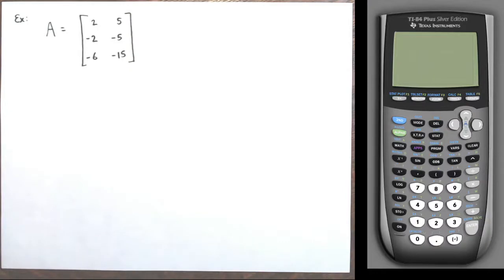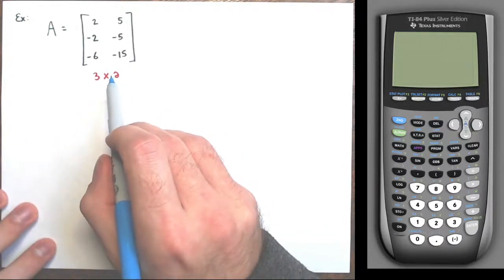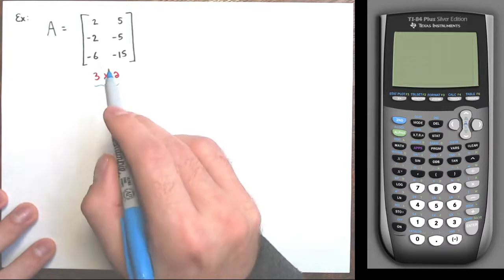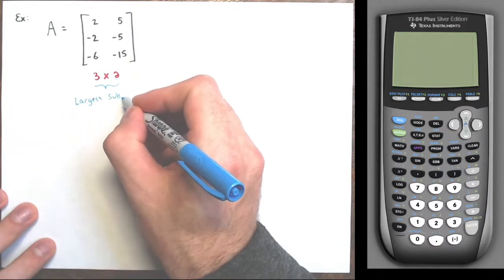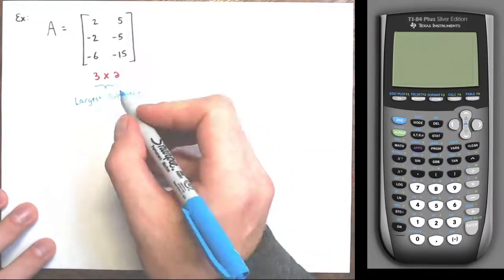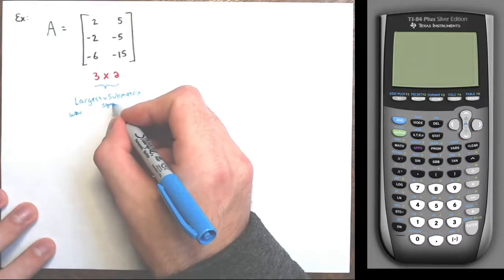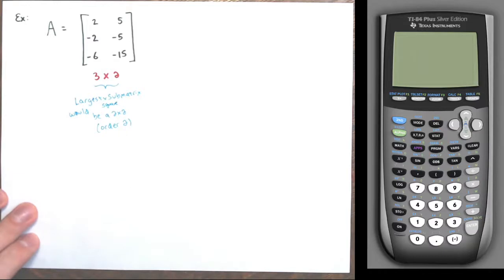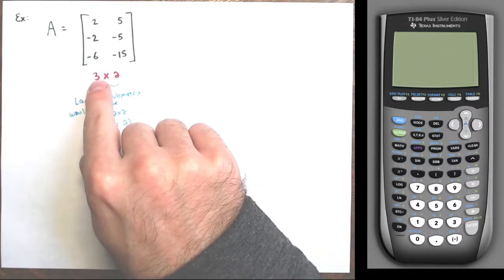Next example: here is a three by two matrix — three rows, two columns. This is not square, so I can't take the determinant directly. From a three by two, you can't make a three by three, so the largest square submatrix you could make is a two by two. The largest order of any minor is two.